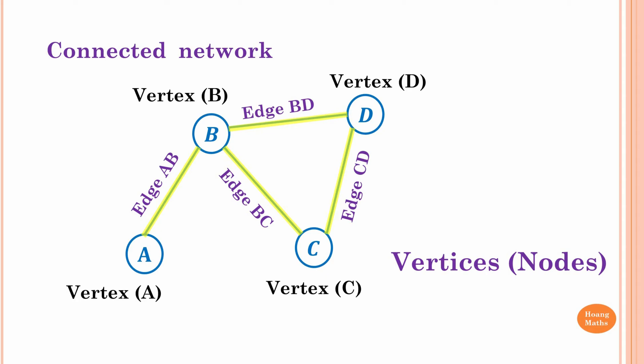Edge BC, edge BD, and edge CD. From A to B we have only one line, so the degree of A is one. From vertex B we have edges one, two, and three, so the degree of B is three. From D we have two edges, so the degree of D is two.